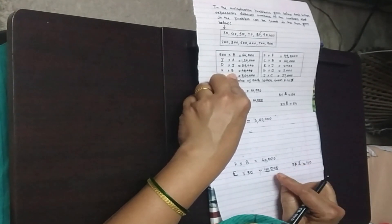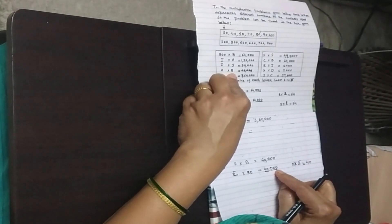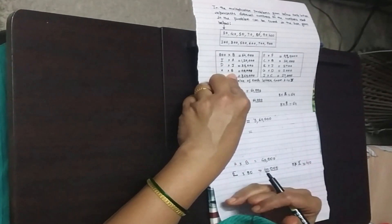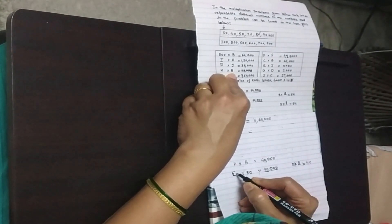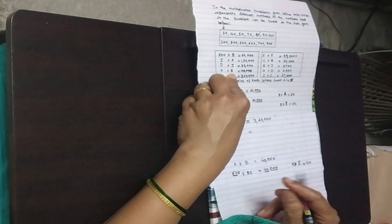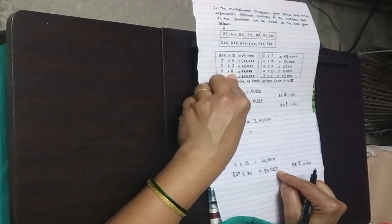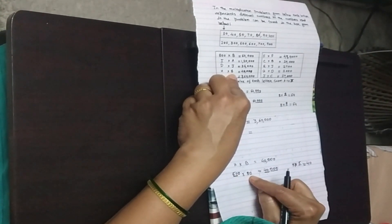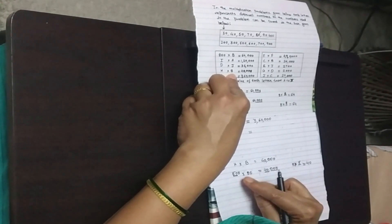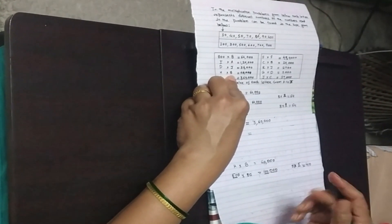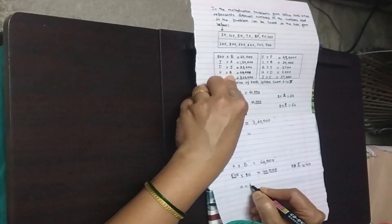We have to adjust 3 zeros total. One zero is already present in the value of b, so we need 2 more zeros from the multiplicand h. That means along with 5, I write 2 zeros — so h equals 500. Let us check: 500 into 80 — 5 into 8 is 40, and there are 3 zeros total in the two numbers, giving 40,000. That matches the product, so the value of h is 500.